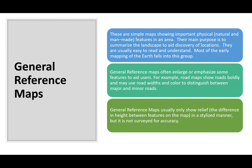General reference maps usually only show relief — the difference in height between features — in a stylized manner, but it's not surveyed for accuracy. Scale is important for general reference maps, but it's not usually down to the large-scale level like you might see in a map made with Google Maps.